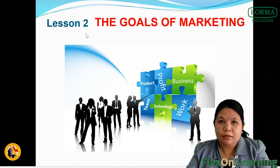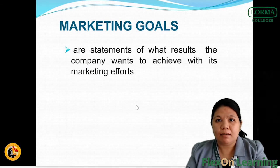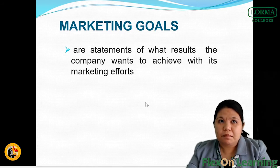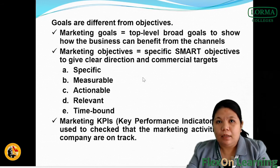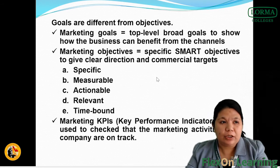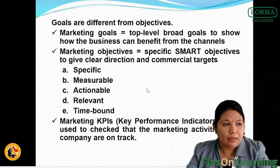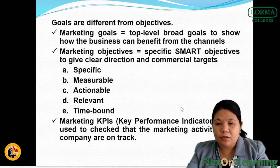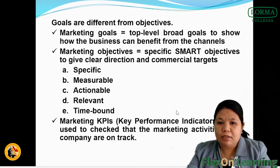Now let's move on with the goals of marketing. Marketing goals are statements of what results the company wants to achieve with its marketing efforts. You cannot just market goods and services without targeting a goal. Goals are different from objectives. Marketing goals are top-level broad goals to show how the business can benefit from the channels. Marketing objectives are specific SMART objectives to give clear direction and commercial targets — specific, measurable, actionable, relevant and time-bound. We also have marketing KPIs, or key performance indicators, used to check that the marketing activities of a company are on track.